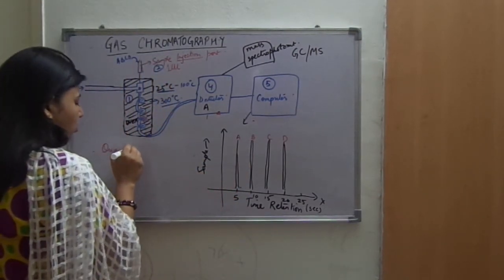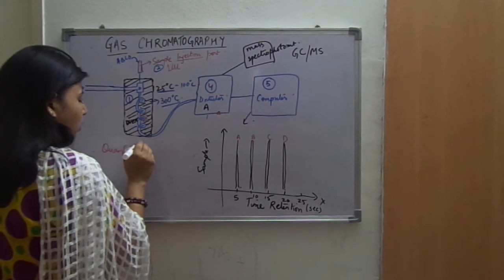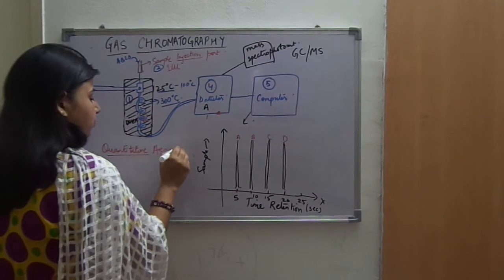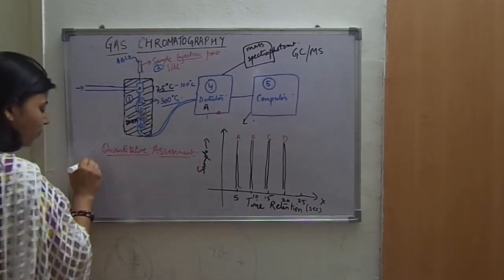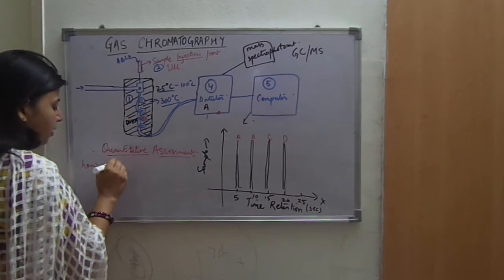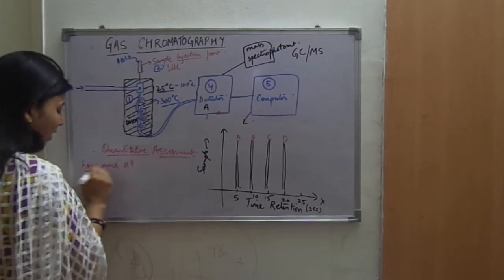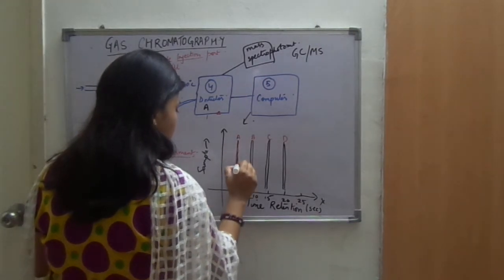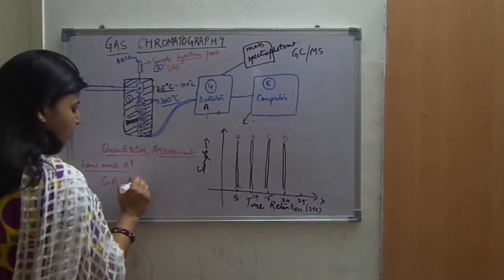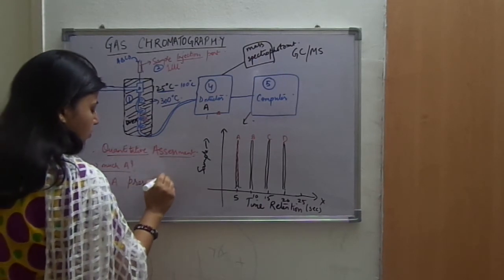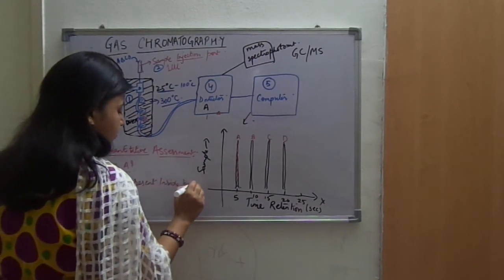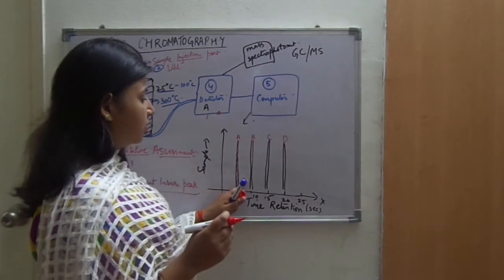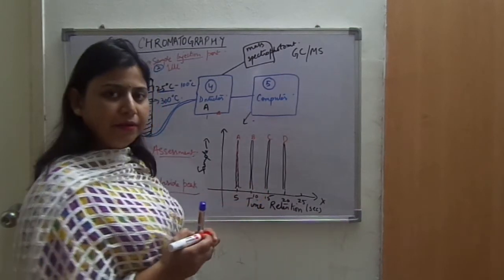If you have to find the quantitative assessment — how much of A is present — you find the surface area present inside the peak. The surface area inside the peak gives you the quantity of A present. Similarly, you can calculate the quantity of B, C, and D.